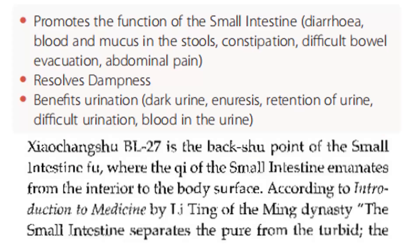For the summary, Bladder 27 promotes the function of the small intestine for diarrhea, blood and mucus in the stools, constipation, difficult bowel evacuation, and abdominal pain. It resolves dampness and benefits urination for dark urine, enuresis, retention of urine, difficult urination, and blood in the urine.